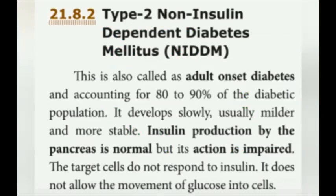Type 2: Non-insulin dependent diabetes mellitus, also called adult-onset diabetes. In this case, insulin production by the pancreas is normal but its action is impaired. The target cells do not respond to insulin, preventing glucose from moving into cells. The causes are multifactorial, including increasing age, obesity, sedentary lifestyle, overeating and physical inactivity.